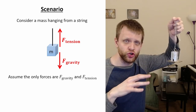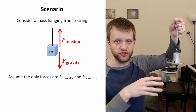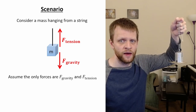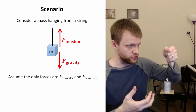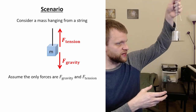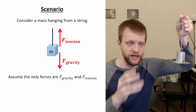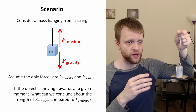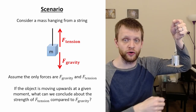We're going to assume there are no other forces acting on it — no air resistance or any other forces, just the force of tension pulling up and gravity pulling down. And let's say at a particular moment this object is moving upward. If the object is moving upwards at a given moment, what can we conclude about the strength of the tension force compared to the strength of gravity?